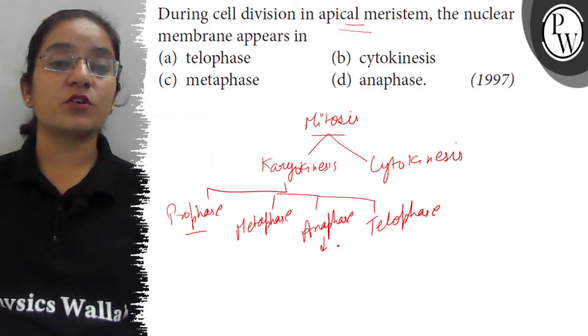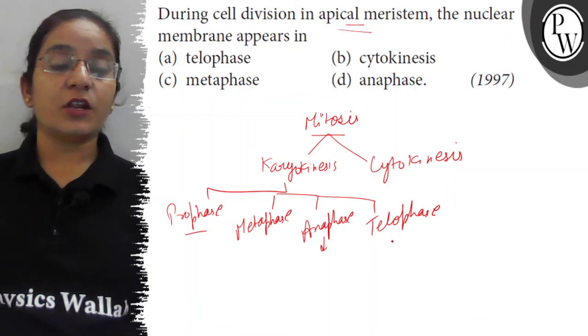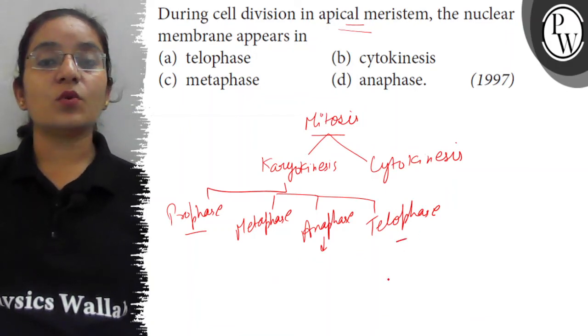move towards opposite poles of the cell. Once they reach the opposite pole, telophase occurs and the nuclear membrane, nucleolus, and cell organelles that disappeared now reappear